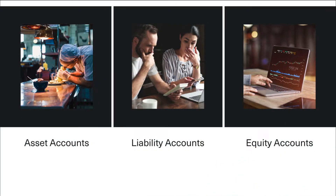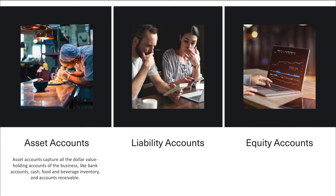Here's a detailed walkthrough of a chart of accounts. Let's examine the major sections and how they specifically pertain to a restaurant's business. We begin with the asset accounts, which capture all the dollar value holding accounts of the business, such as bank accounts, cash, food and beverage inventory, and accounts receivable. Usually, asset accounts are coded so that $1,000 is cash, and then asset subtypes follow by order of liquidity.